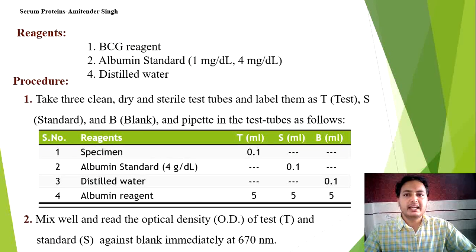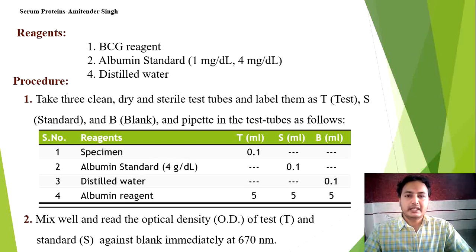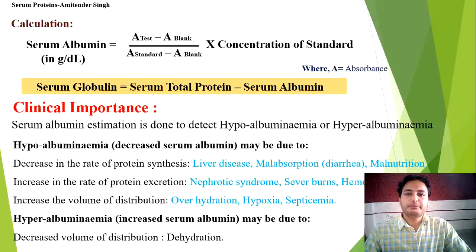Reagents include BCG reagent and an albumin standard. The standard concentration and volumes vary based on the kit's reagent concentrations, so read the kit procedure carefully before pipetting. Take 3 test tubes labeled T, S, and B. Add sample to T, standard (4 g/dL used here) to S, and blank to B. Add BCG reagent 5 ml to each, mix well, and measure absorbance at 670 nm for T, S, and B immediately. Calculation: Serum albumin (g/dL) = (Absorbance of Test − Absorbance of Blank) ÷ (Absorbance of Standard − Absorbance of Blank) × concentration of standard (4 g/dL). A stands for absorbance.